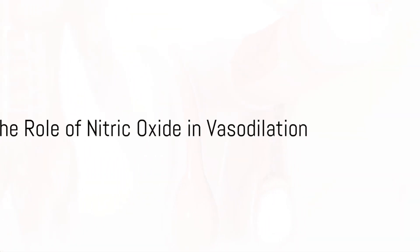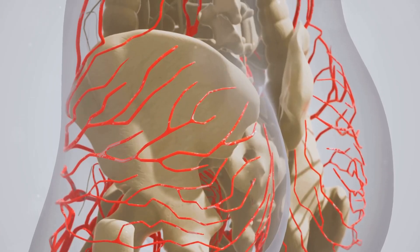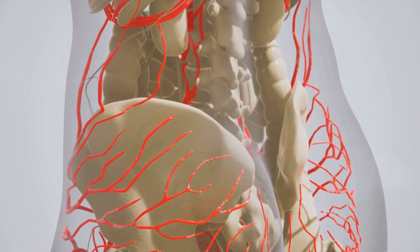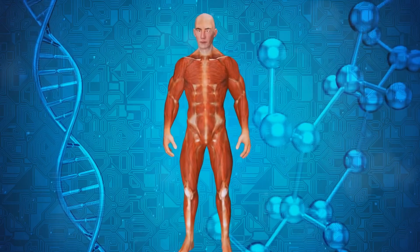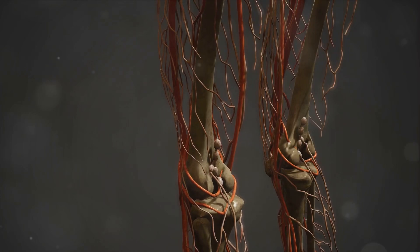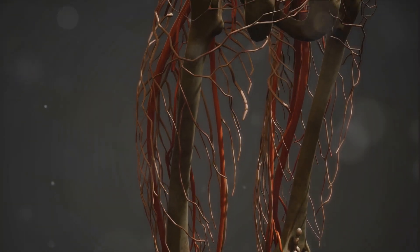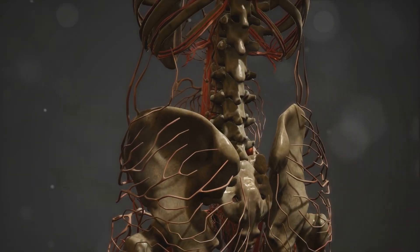This release of nitric oxide is like flipping a switch. It sets off a cascade of events that result in the relaxation of smooth muscle within the corpora cavernosa. Imagine these muscles like gates opening wide to allow an influx of blood.